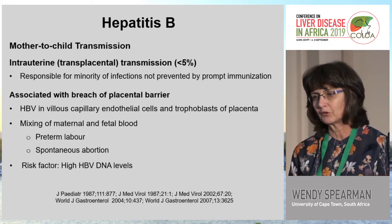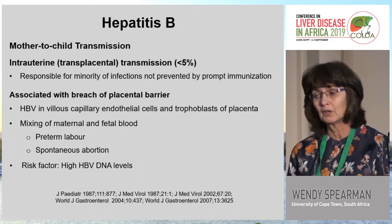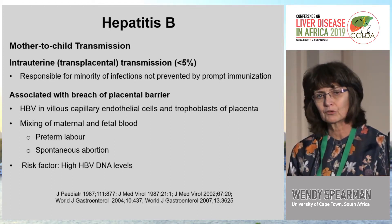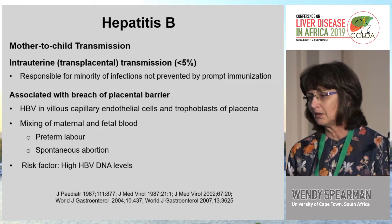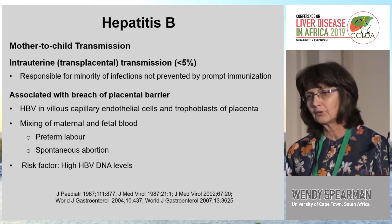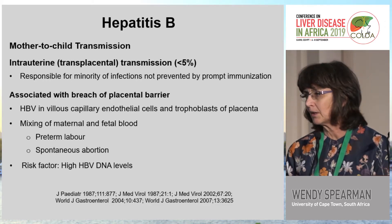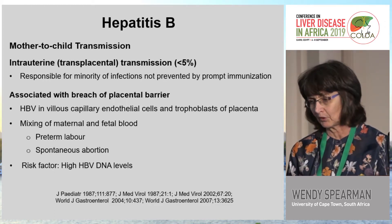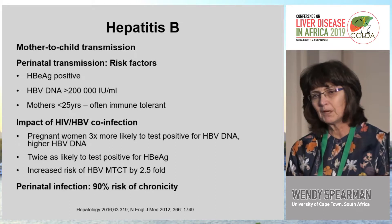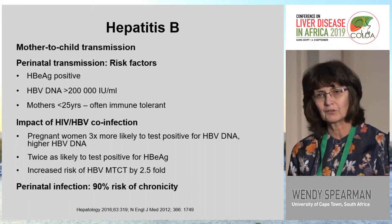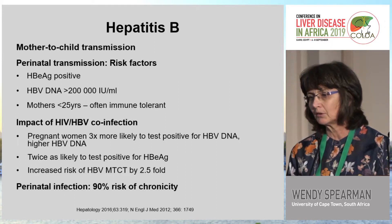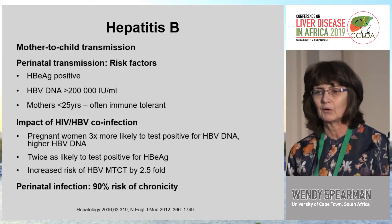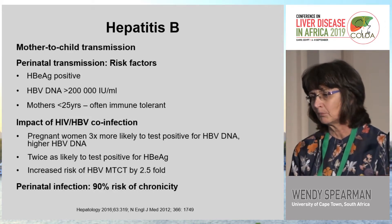The key issue is mother-to-child transmission. Intrauterine or transplacental transmission accounts for less than 5%, probably associated with a breach in the placental barrier — hepatitis B has been demonstrated in villus capillary endothelial cells and placental trophoblasts — and thought to involve mixing of maternal and fetal blood during preterm labor or spontaneous abortion. High hepatitis B DNA levels are an obvious risk factor. The main problem is perinatal transmission, with risk factors including e-antigen positivity, high viral loads, and age under 25, who are more likely to be e-antigen positive with high viral loads and therefore more infectious.